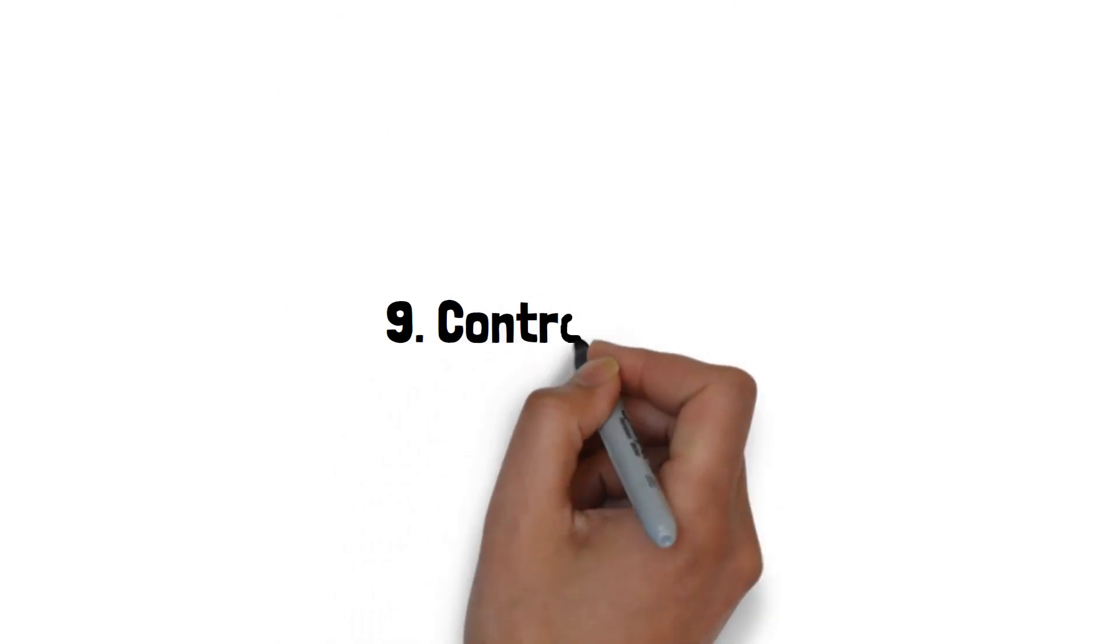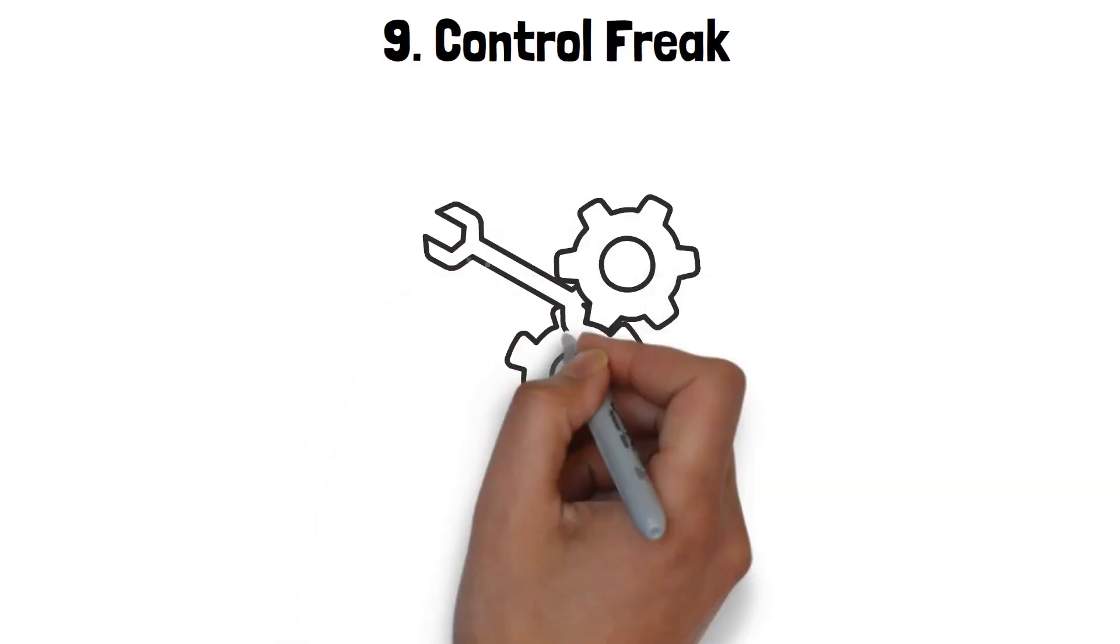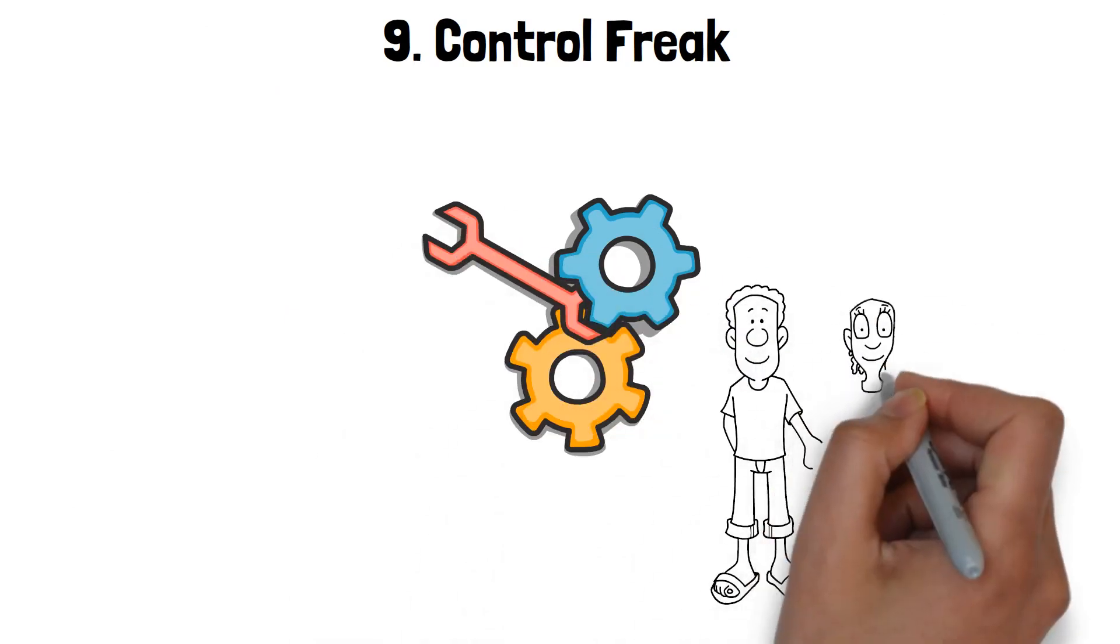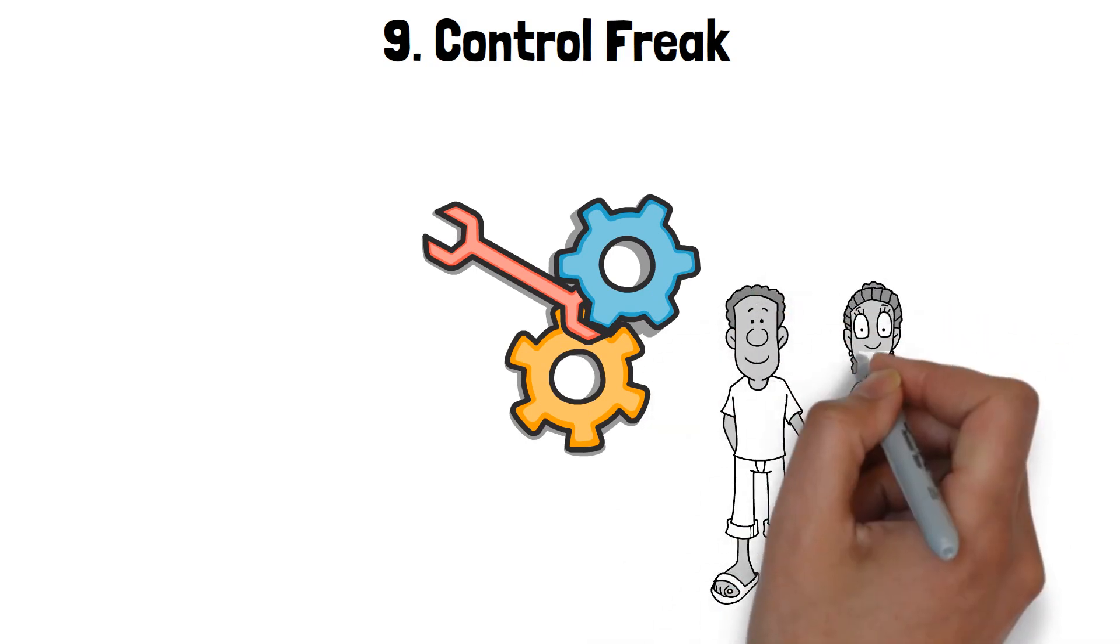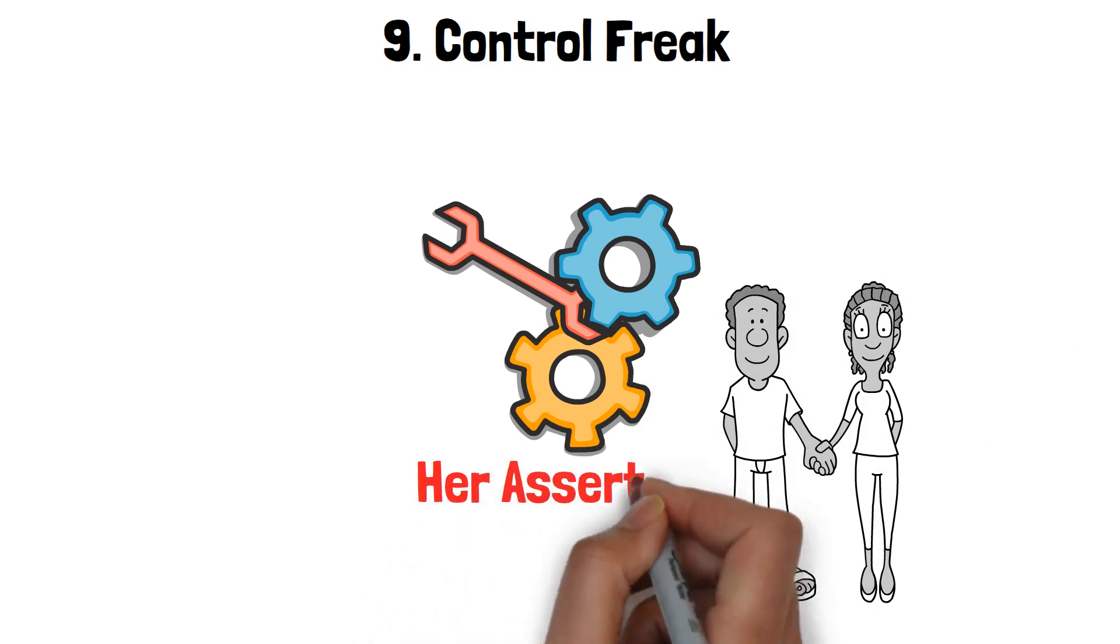9. Control Freak. In the world of a narcissistic wife, control is king. She thrives on dictating the narrative, from the choice of restaurant for date night to major decisions that affect both of your lives. It's not about mutual collaboration, it's about her asserting dominance.